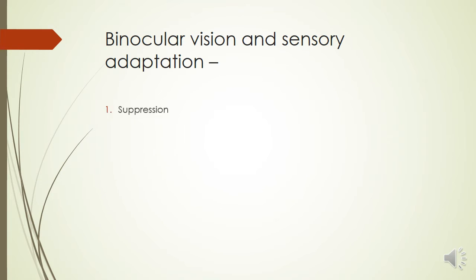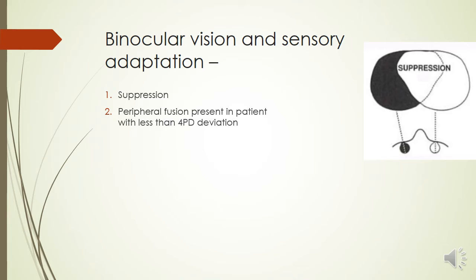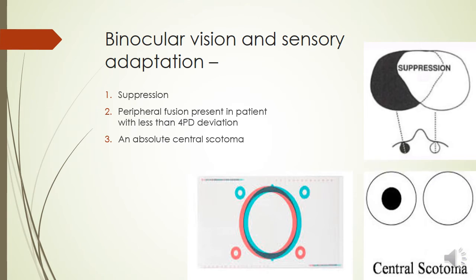Regarding binocular vision and sensory adaptation, there is commonly a suppression present, and this is more of a central suppression. The patient will have a suppression scotoma in the central area where diplopia is greater, whereas peripheral fusion is present if the patient has less than four prism diopters of deviation. When deviation is less than four prism diopters, peripheral fusion can still be present, so the patient will report very little diplopia peripherally. But in the primary gaze there is more diplopia, and an absolute central scotoma is very commonly seen in such cases.